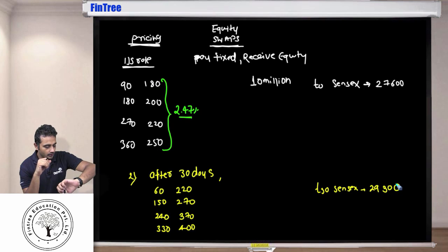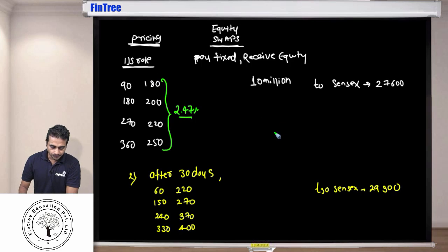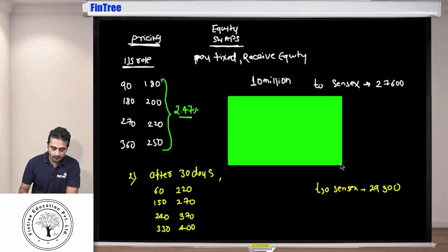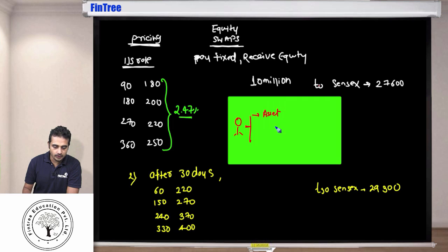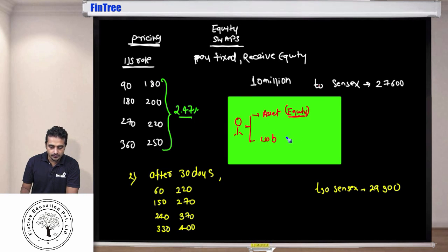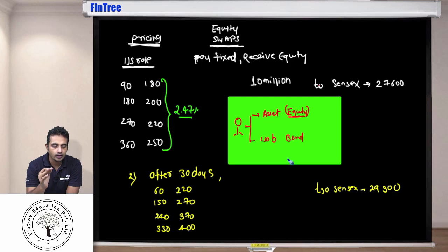This is one of the easiest parts of swap valuation to handle. The party we are dealing with has one asset and one liability. The asset is equity — because the party is going to receive equity returns, so think of it as having invested 10 million into the equity index. The liability is a fixed coupon bond. We find the value of the fixed coupon bond, find the value of the equity index, and take the difference.